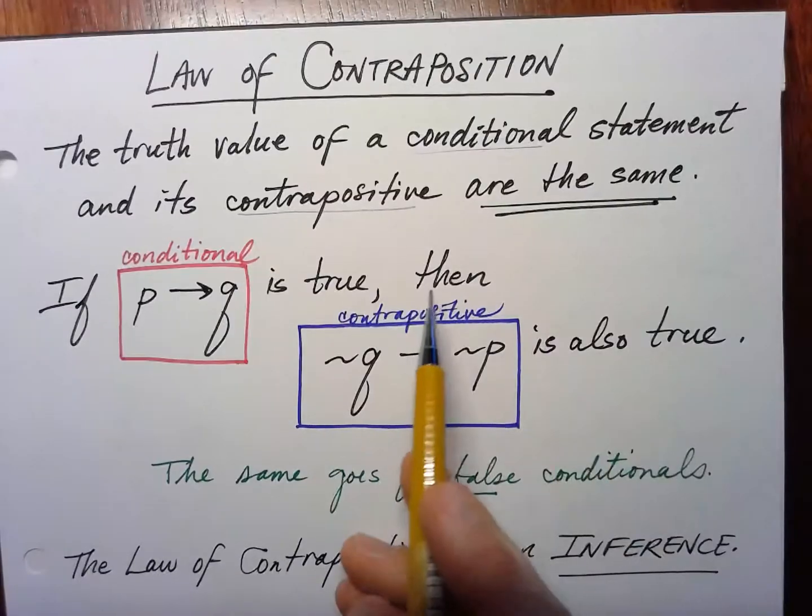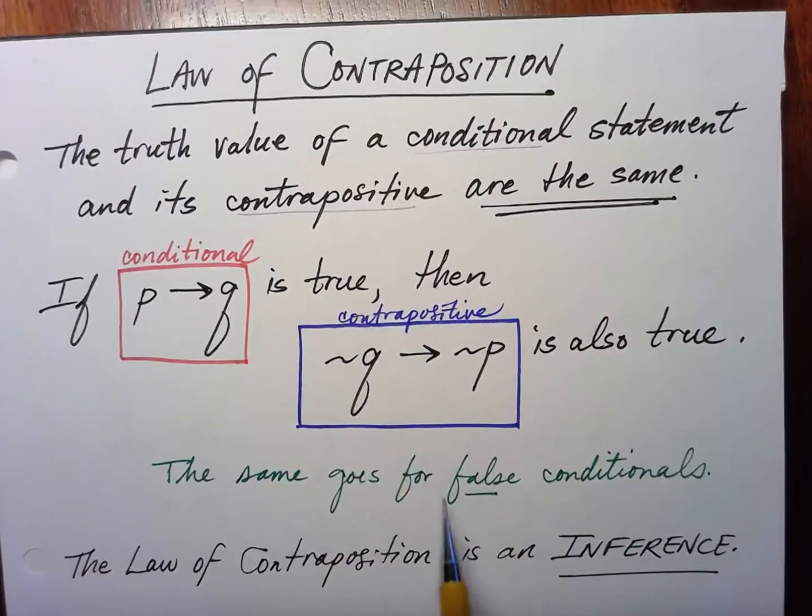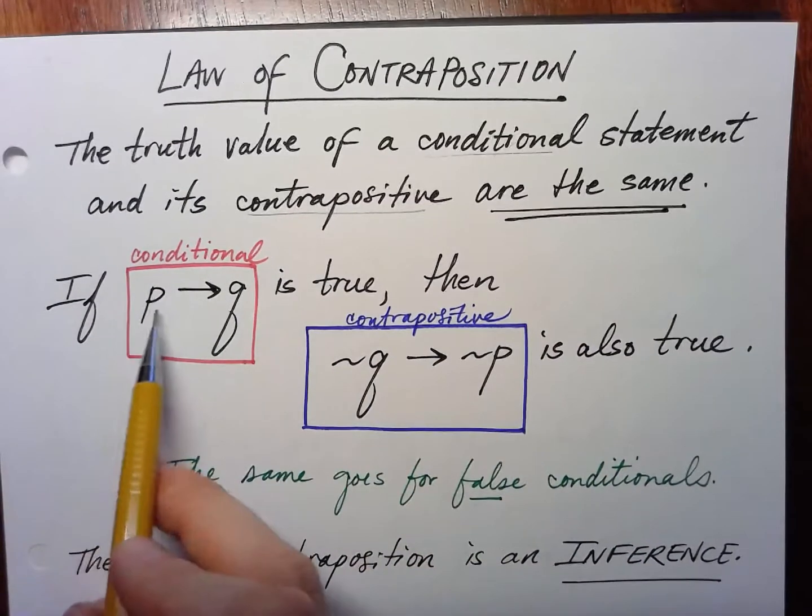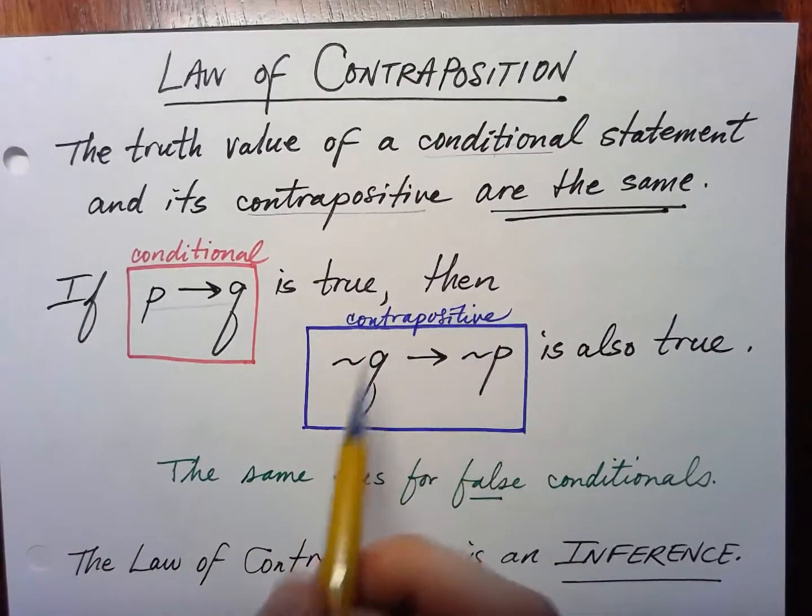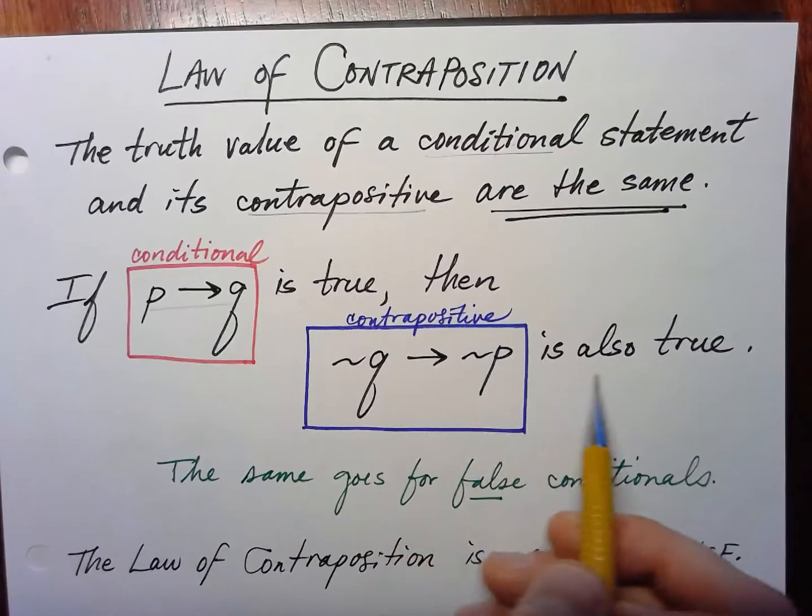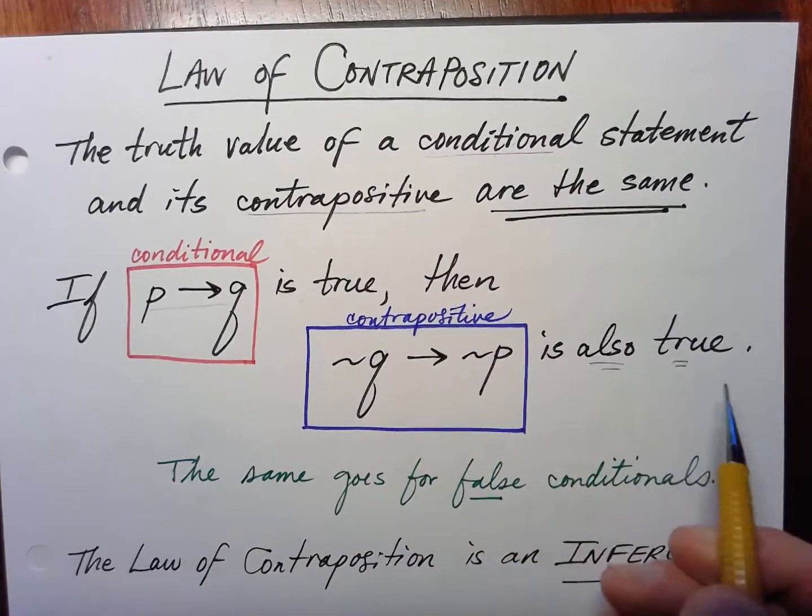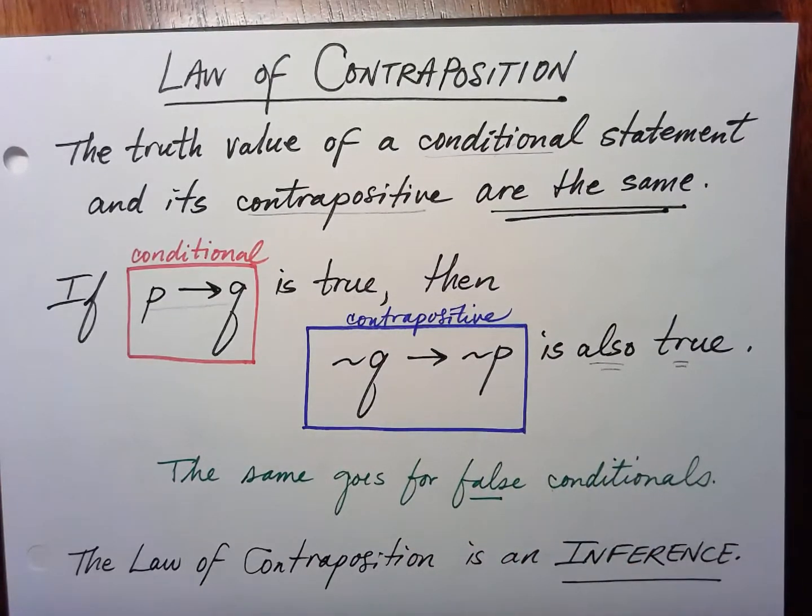This is for true conditionals and false conditionals. So if p implies q is true, then not q implies not p is also true. And the same goes for false conditionals.